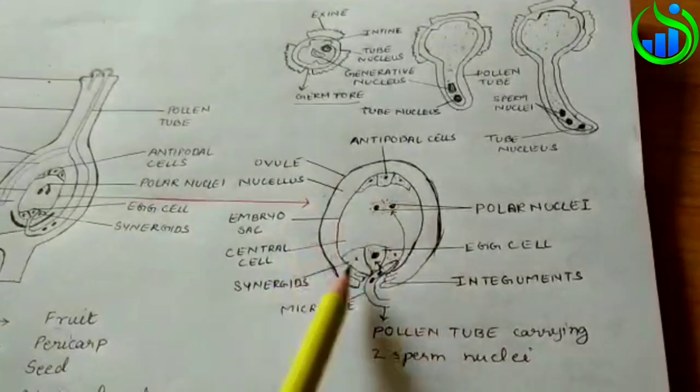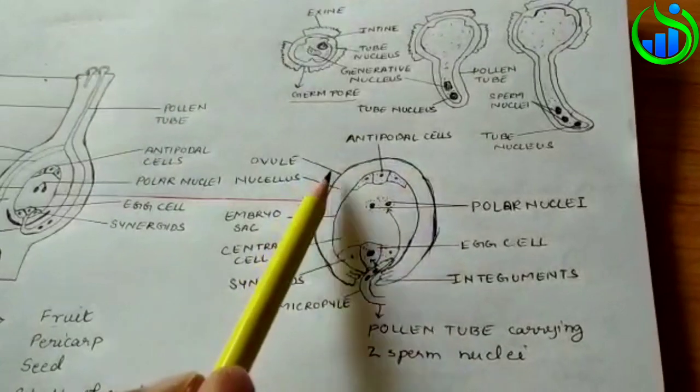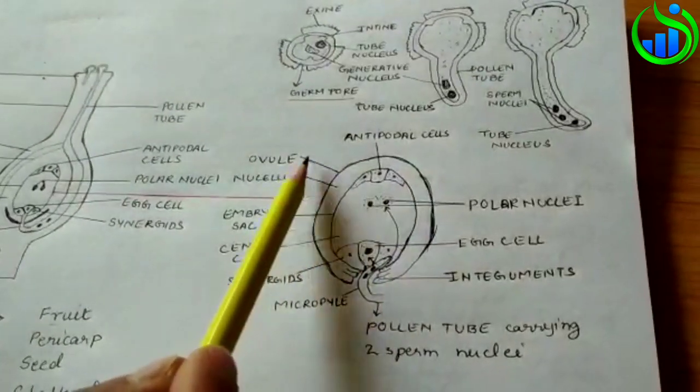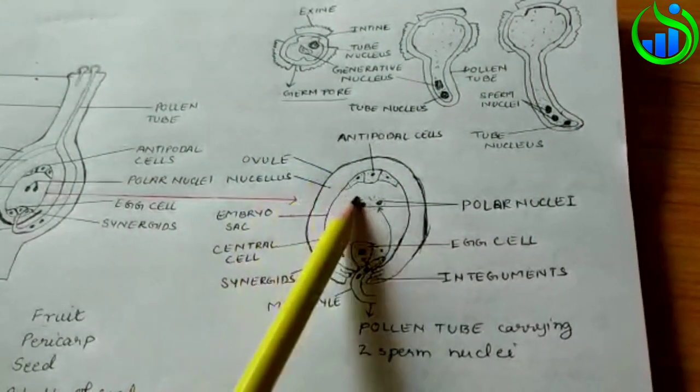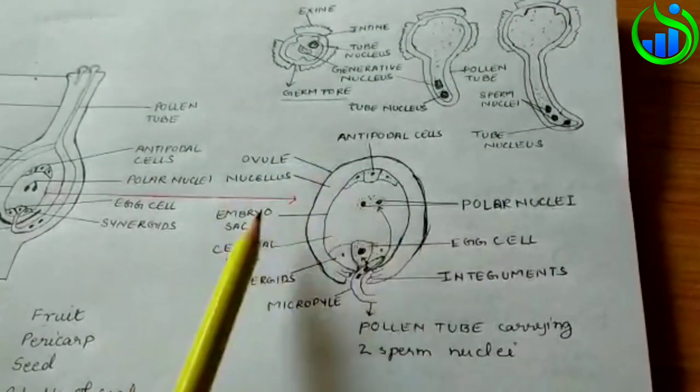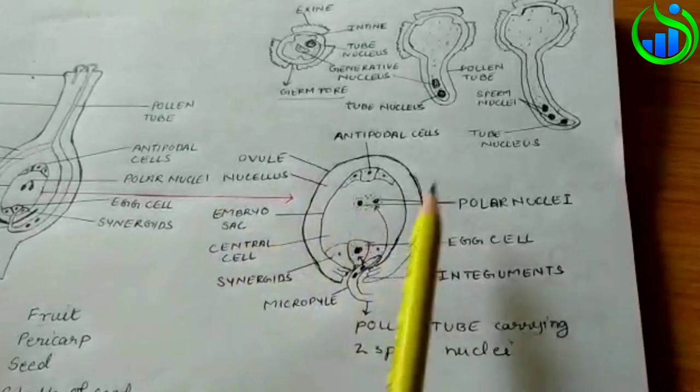The ovule is the ovule. The ovule has the nucellus, the developing embryo sac, the nourishment of the embryo, the nourishment provider.